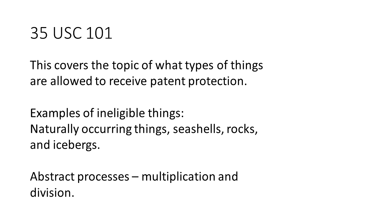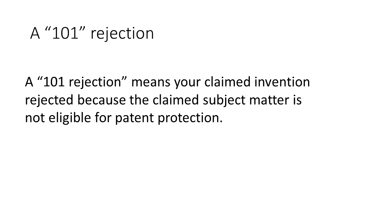At a high level, here are some examples of things that cannot be patented: naturally occurring things such as seashells and rocks, and abstract processes such as multiplication and division. If you filed a patent application and received a 101 rejection, that means the patent office considers your claim to contain subject matter that is ineligible for patent protection.